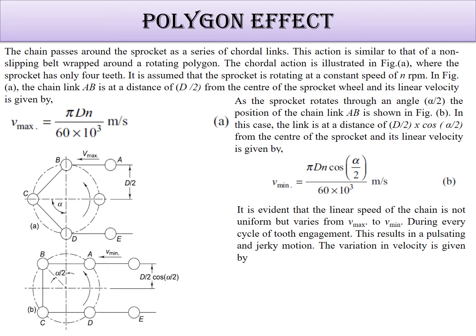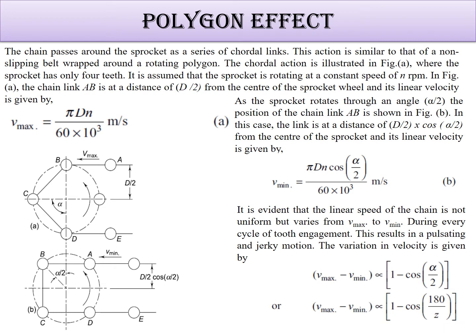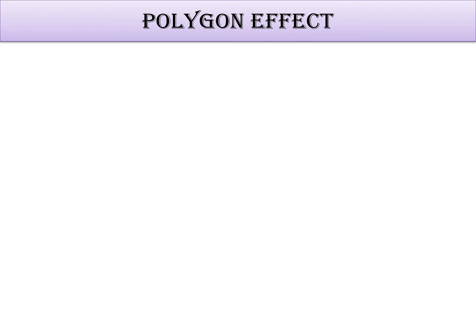The speed variation is not linear — it cycles from maximum to minimum repeatedly. Therefore, V_max minus V_min is directly proportional to (1 - cos(alpha/2)), or equivalently (1 - cos(180°/z)), where z is the number of teeth.